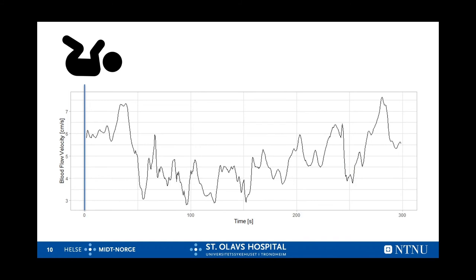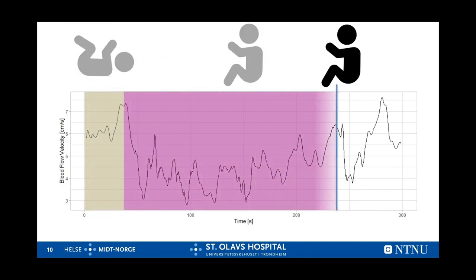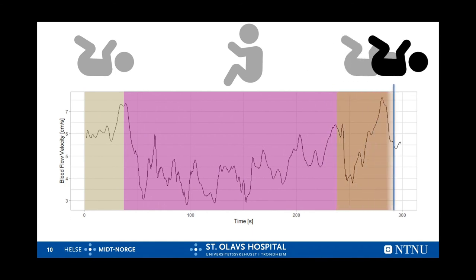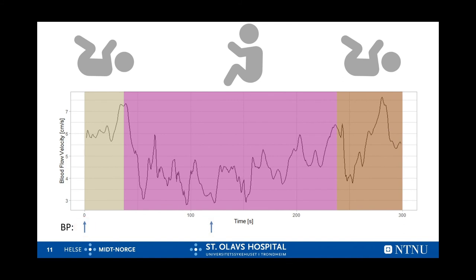Here you can see the mean velocity recording from a single test. The infant was laid on its back with the Neo Doppler probe attached. After 40 seconds, we tilted him upwards and kept him in upright position for 200 seconds, before laying him back and monitoring for 60 seconds — five minutes in total. We measured blood pressure before start and after 120 seconds. We divided the signal into four time segments, or time windows of 40 seconds, and for each segment we calculated the average mean velocity, heart rate, and pulsatility index.